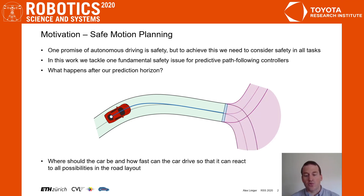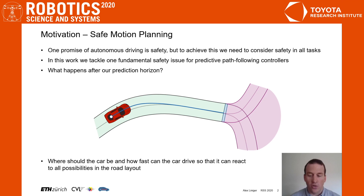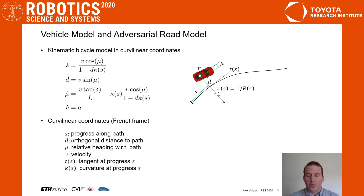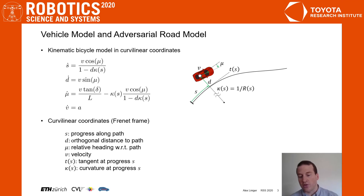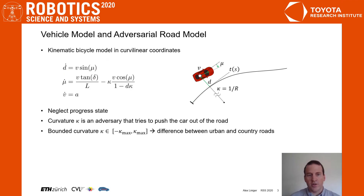In this paper we propose to treat the road after the prediction horizon as an adversarial player. This allows us to establish safe sets for which we can show that whatever the adversarial road looks like, we can still follow it safely. To make this more precise, we use a kinematic bicycle model in curvilinear coordinates. In this model the shape of the road is captured by the curvature, therefore we consider the curvature as an adversarial player.